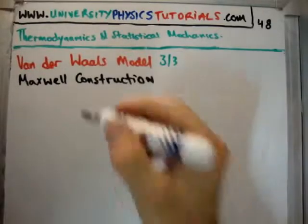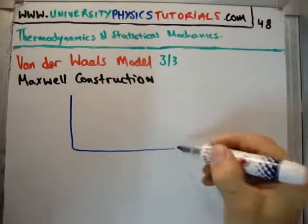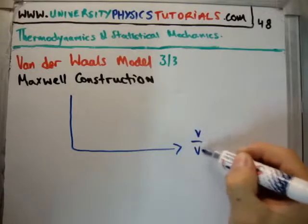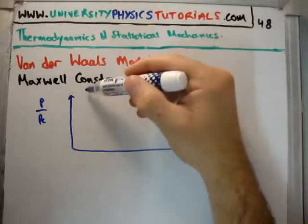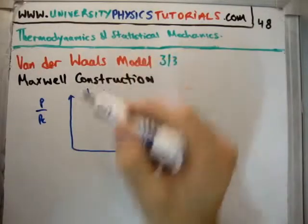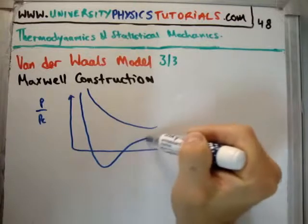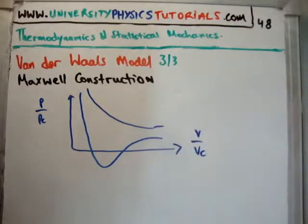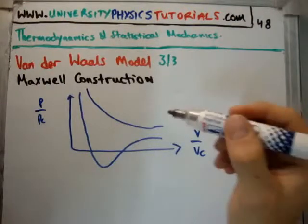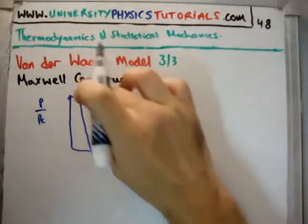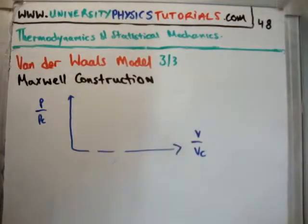So we saw in video number 46 that if we plot on a PV diagram with V over V critical and P over P critical, for the van der Waals model we get something that looks like this. I'm just going to draw it to two extremes, with the bottom one there being kind of the archetypal van der Waals PV diagram. But if we look at this, let's just mark some points on this. I'm going to redraw this because I only want to look at one.